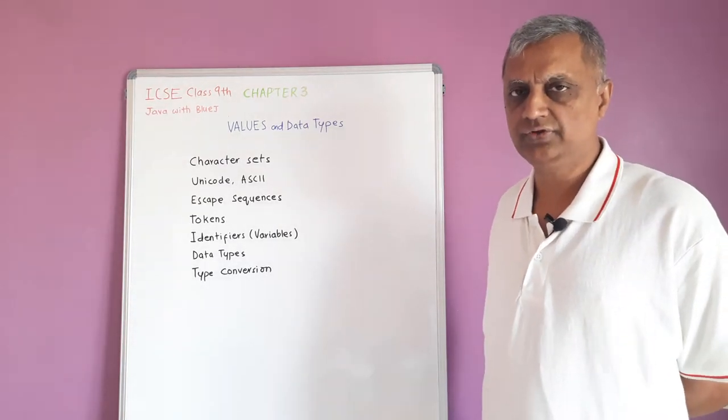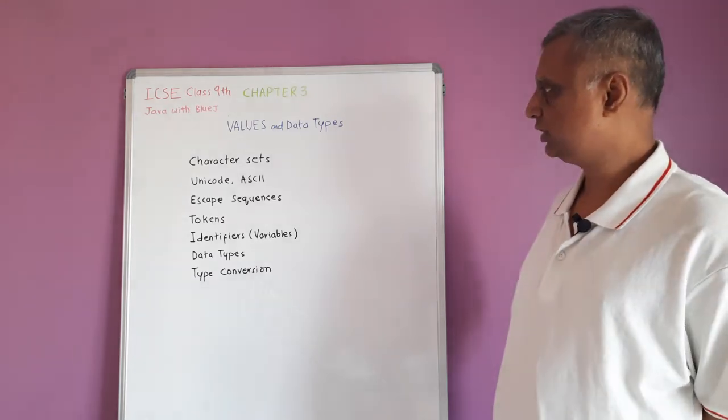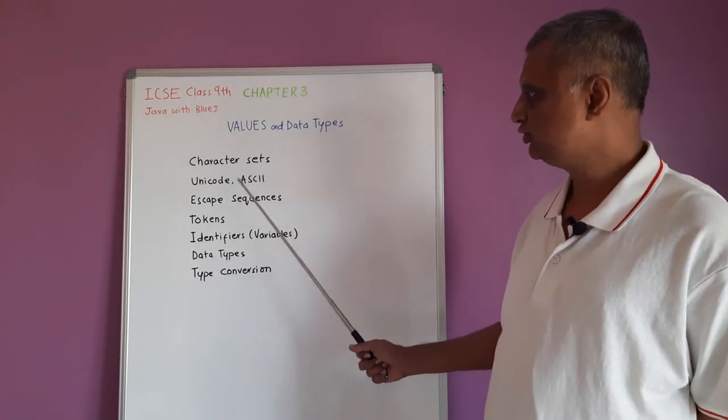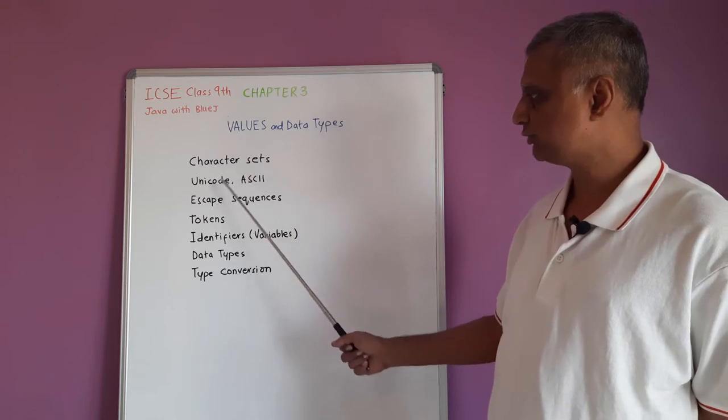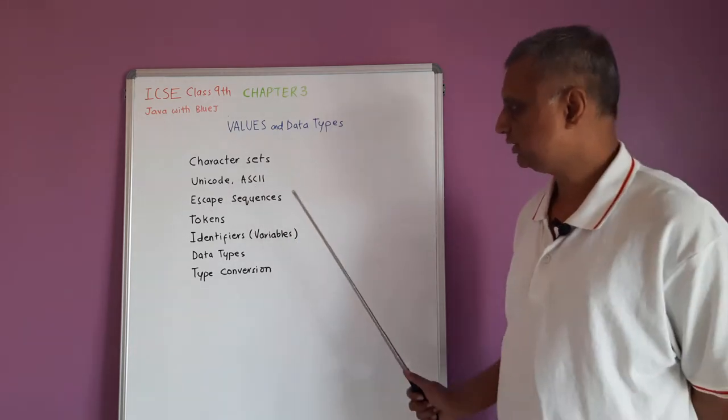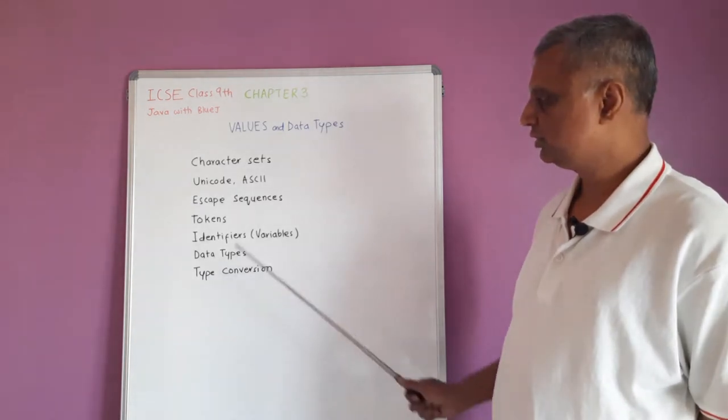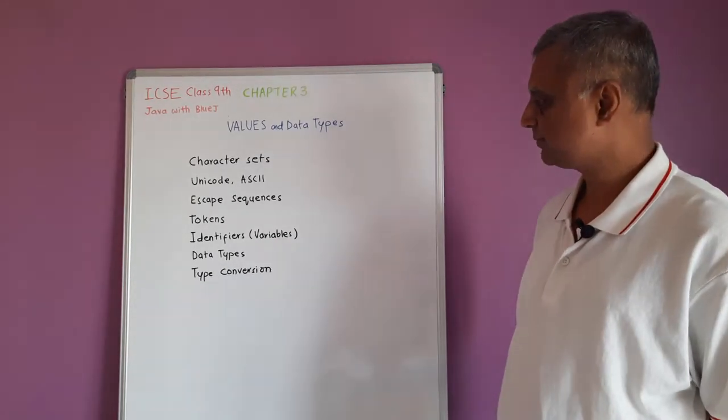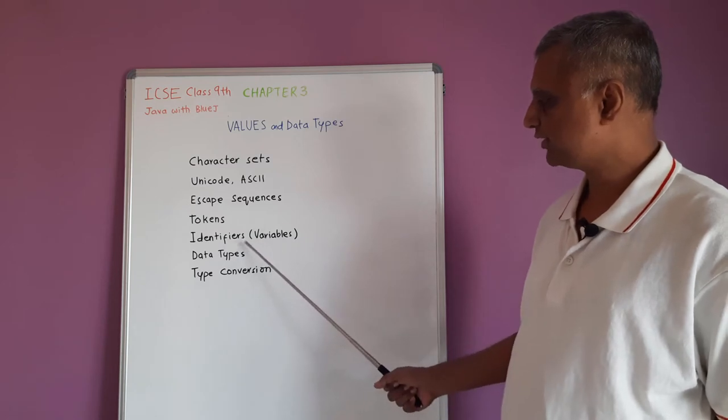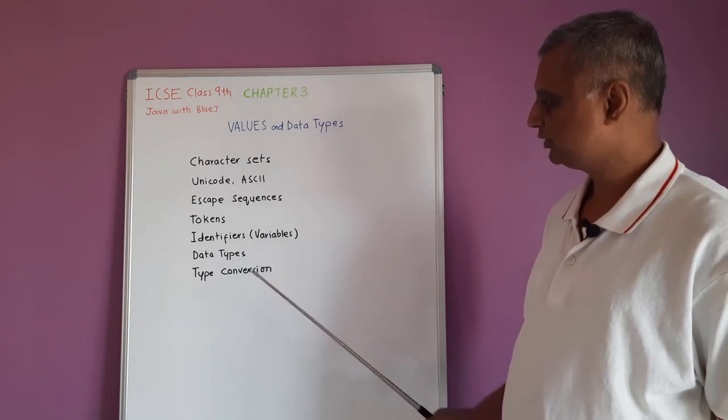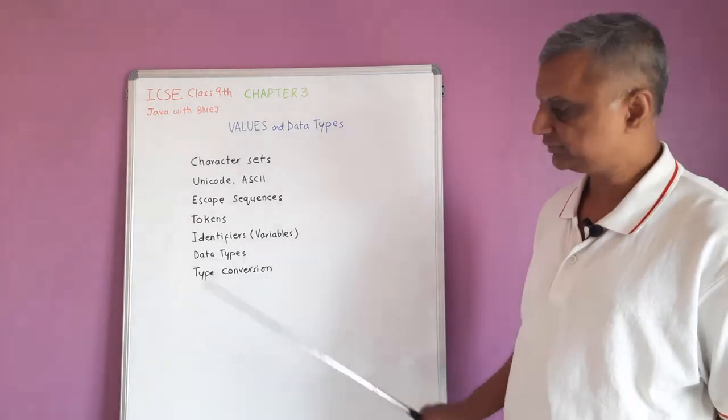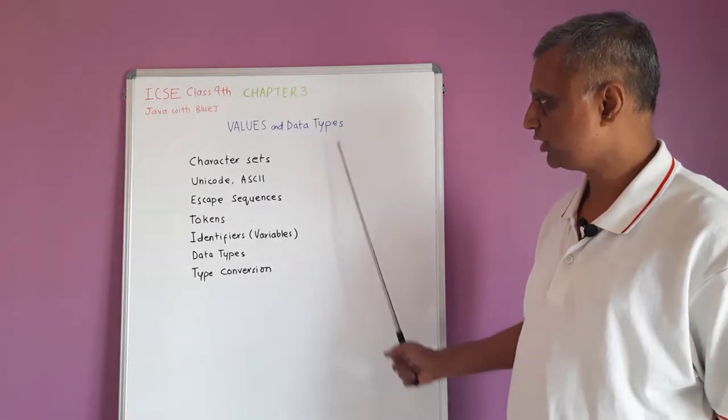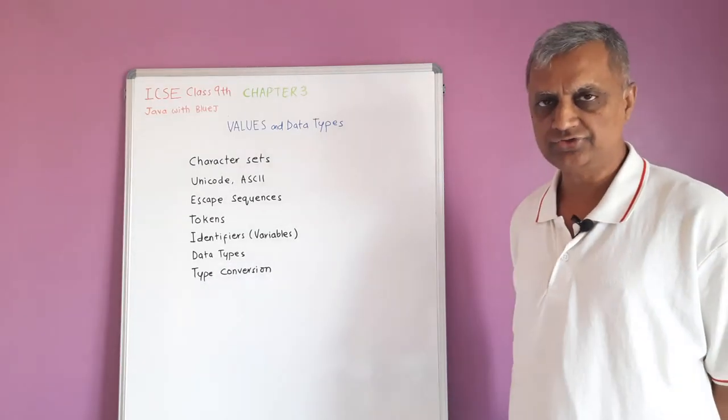Now, let us see what is the scope of this syllabus. We are going to learn character sets, Unicode and ASCII, escape sequences, tokens and their different types, identifiers or variables, different types of data types in Java, and how type conversion is done. These are the points we are going to learn in this chapter.